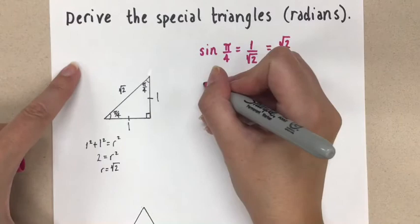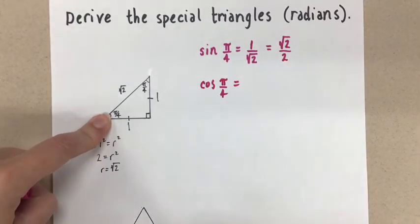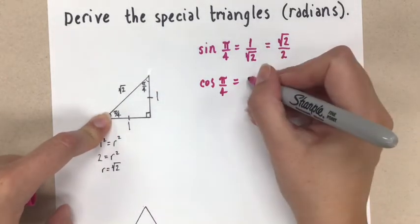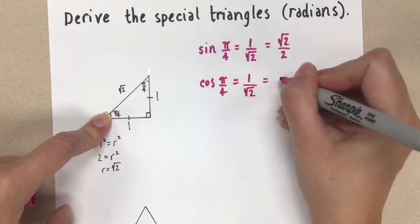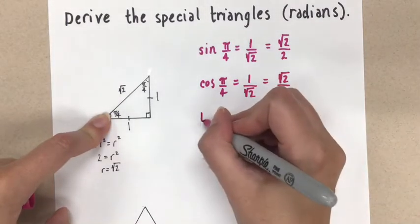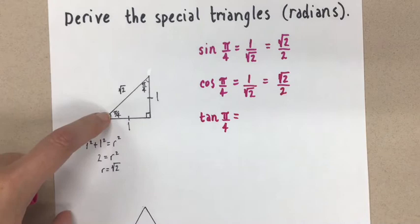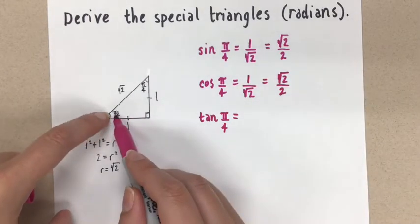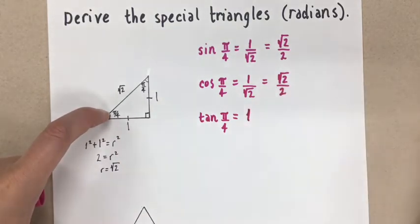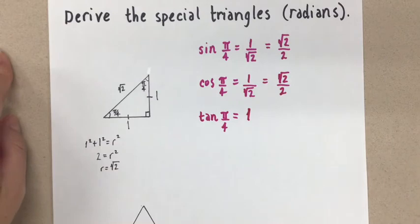Let's do cosine of pi over 4. Using this angle, we're going to do adjacent over hypotenuse, which gives us 1 over root 2 again. That is the same thing as root 2 over 2 once we rationalize. And finally, tangent of pi over 4. The tangent ratio is opposite over adjacent, so we have 1 over 1, which equals 1. Those are the exact values for the special angle pi over 4, and we get them from that triangle.